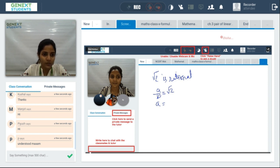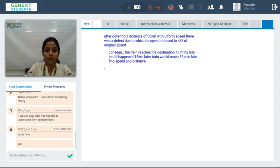The problem involves covering a distance of 30 kilometers. A train is traveling with some uniform speed, which we'll consider as x. Then there was a defect due to which the speed reduced.